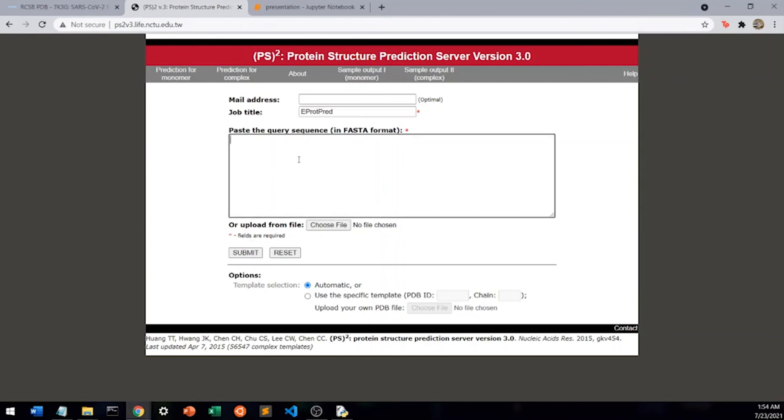So to use the server, first input a job title, then put the FASTA sequence, and hit submit and wait as it outputs a PDB file. After you download that, we can move on to the next step.